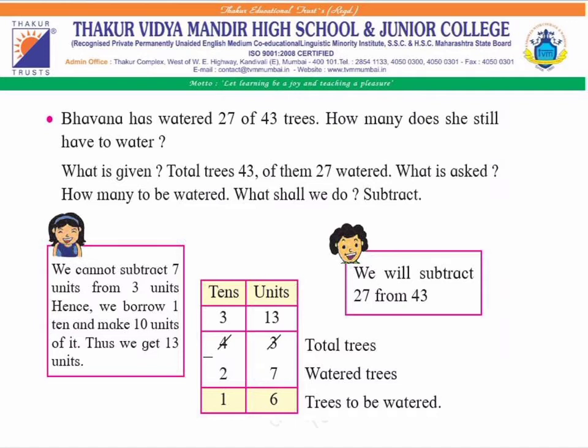In the units column, we have three and seven — we have to subtract seven from three, but three is smaller and seven is bigger. So we borrow: in the tans column there are four tans, we take one tan, so it becomes three tans, and in the units column it becomes 13. Now, 13 minus seven gives six. In the tans column, three minus two gives one. Total: 16 trees still to be watered.